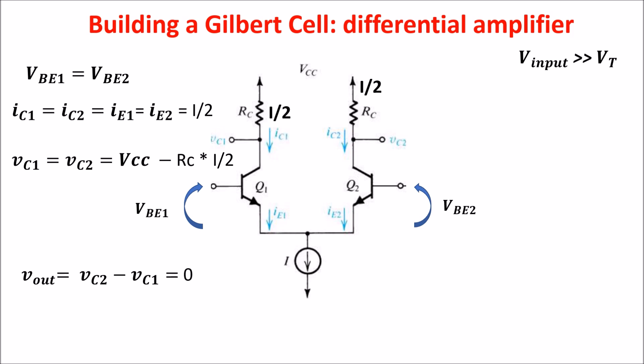If we now consider a signal VBE1 greater than VBE2 such that VBE1 minus VBE2 is much greater than the thermal voltage VT, we have that Q1 is on and Q2 is off, and the current I passes through the first branch, so VC1 equals VCC minus RC times I and VC2 equals VCC.